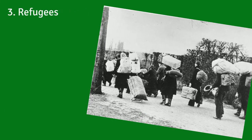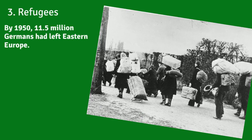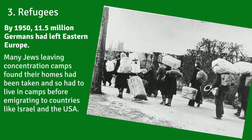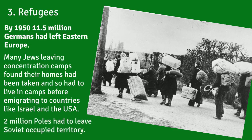World War II created a huge number of refugees. By 1950, 11.5 million Germans had left Eastern Europe. Many Jews leaving concentration camps found that their homes had been taken, and so they had to live in camps before emigration to countries like Israel and the United States. After World War II, two million Poles had to leave Soviet-occupied territory.